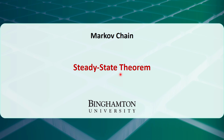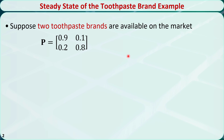In a previous video, we talked about how to calculate n-step transition probabilities. We can repeatedly apply the formula and see what happens when we increase the value of n.